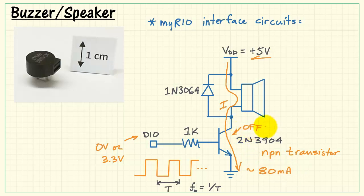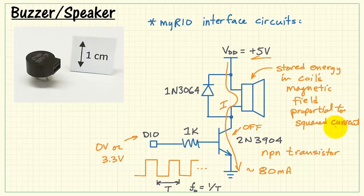Now when you abruptly switch the transistor off, that would seem to suggest that the current should go to zero immediately. However, there is stored energy in the coil's magnetic field which is proportional to the current squared. That energy needs to be dissipated somewhere, and so when you switch it off, the diode becomes forward biased,